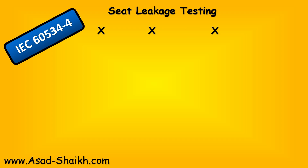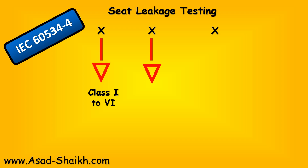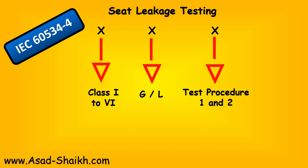There are three important parameters to be considered. The first is the leakage rate class you require — class 1, 2, or 6, etc. The second is the test medium: is it going to be gas or liquid? The third is the test procedure — what is the differential pressure, temperature, etc. In the IEC standard this is divided into test procedure 1 and test procedure 2. For example, in a notation like '4-L-1': 4 stands for leakage class, L means liquid test medium, and 1 is the test procedure.